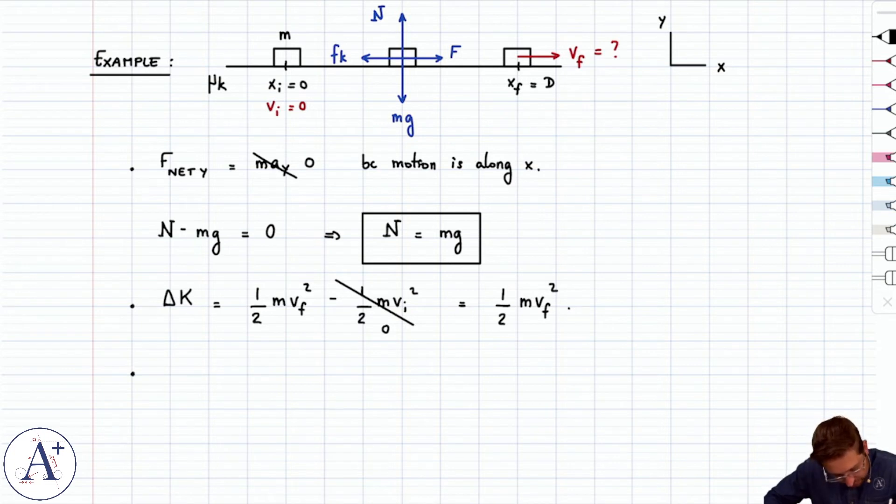Delta k is easy. There's never an issue with delta k. It's really work net that usually is the hard part. So what is work net?